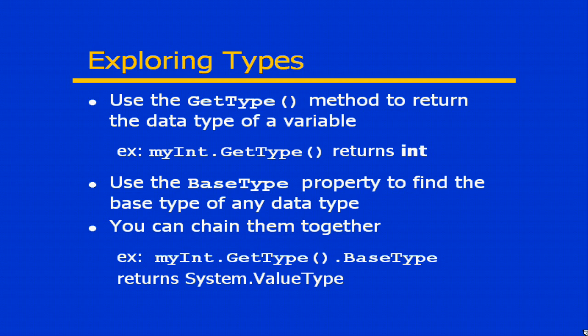We also have a property called BaseType that we can use to find the base type of any data type. This is very helpful if you want to identify whether or not you're actually dealing with a value type or with a reference type. For example, if myint — which is my integer data type — has a data type of int, I can find that base type by using the BaseType property, which returns System.ValueType. This is a very convenient way of identifying the fact that we are dealing with a value type rather than a reference type.